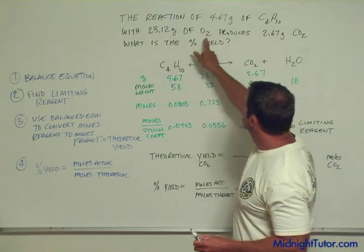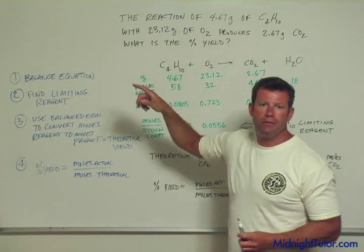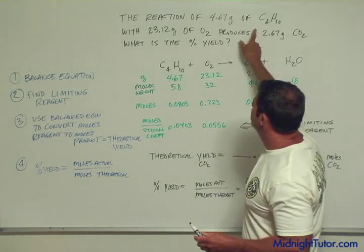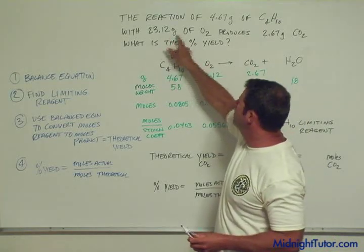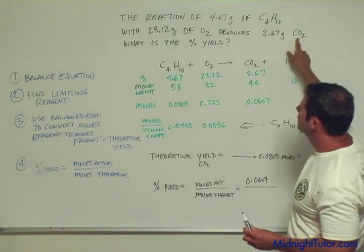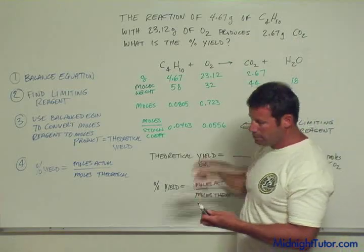With 23.12 grams, that's not methane, that's CH3. Anyway, C4H10 with 23.12 grams of oxygen, O2, produces 2.67 grams of carbon dioxide. What is the percent yield?